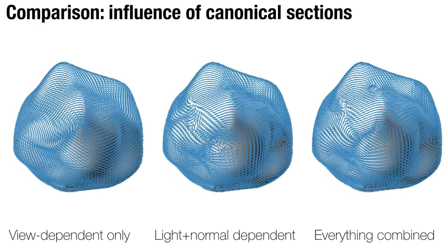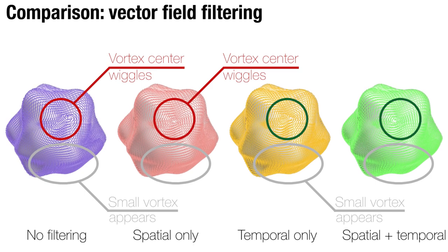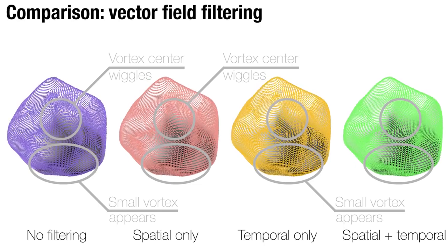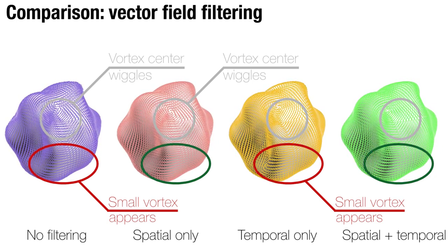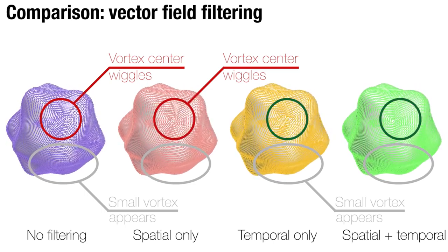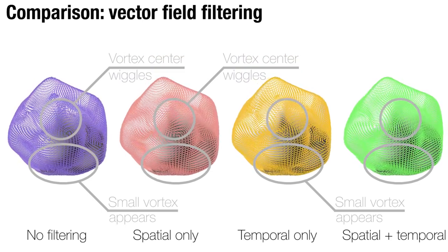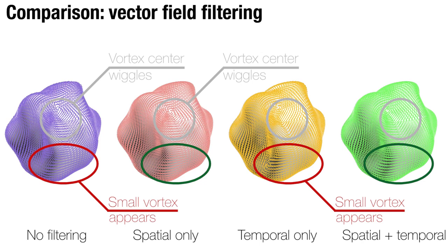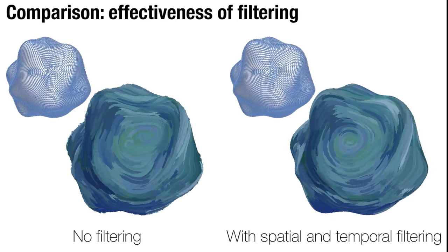Here we did not apply smoothing for the vector fields. Next, we compare the effectiveness of vector field filtering. Without filtering, we see the center of a vortex wiggling around, and there are small vortices here and there. With spatial filtering only, small vortices disappear but the center of the vortex still wiggles. With temporal filtering only, the center becomes stable but the vortices are still there. With both filtering applied together, the center becomes stable and there are no small vortices. When applied to stroke drawing, we see a much more stable animation when spatial and temporal filtering is applied.